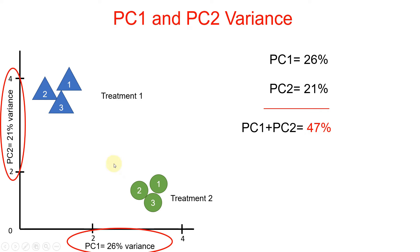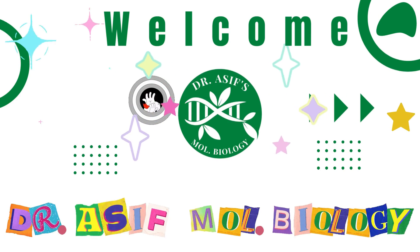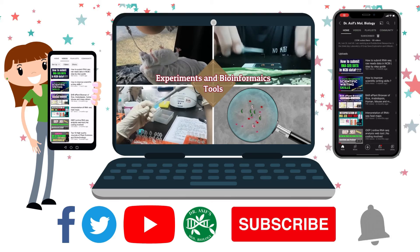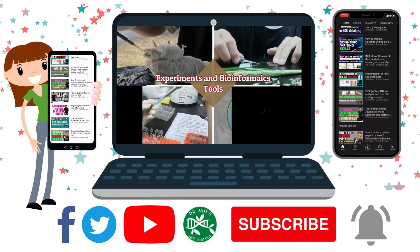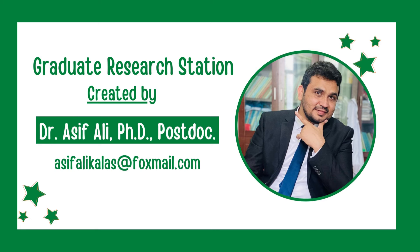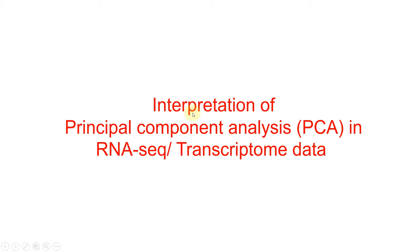What does this 47% mean? Gene expression data showing that 47% of the variation in this transcriptome data was due to treatment 1 and treatment 2. Welcome to another video tutorial. In this video, I will tell you how we can interpret the results of principal component analysis in RNA-seq data.